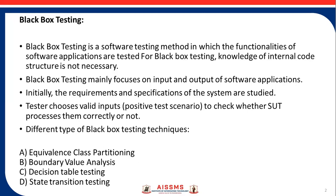Initially, the requirements and specifications of the system are studied in this testing. The tester chooses valid input — positive testing — to check whether the system processes them correctly or not. Some invalid inputs — negative testing — are also chosen to verify that the system is able to detect them. The black box testing software tester executes the test cases, compares the actual output with the expected output, and decides whether test cases passed or failed. For failed test cases, a bug is raised, fixed by the developer, and retested by the tester.